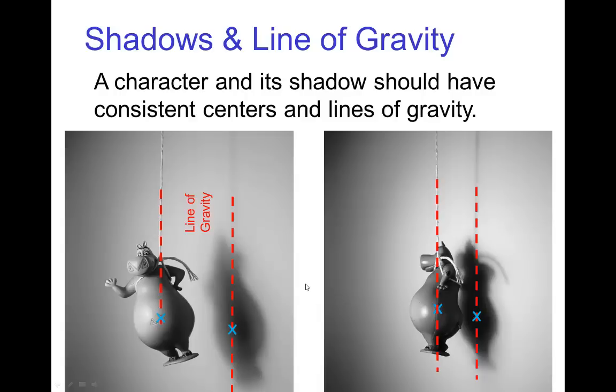So the point here is that regardless of the camera angle or the shadow of the character, everything has to look consistent that gravity is pulling down on the object or the character, and that we have a consistent line of gravity.